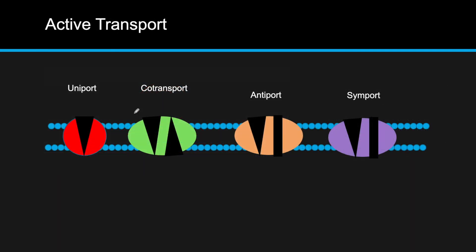Moving on to active transport: active transport is the transport of molecules against their concentration gradient. Since it moves molecules from an area of low to high concentration, rather than high to low, it requires energy. The first category is primary active transport, which uses ATP, and molecules are moving from low to high concentration.